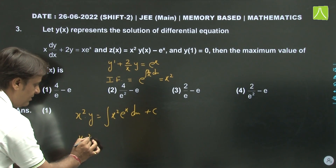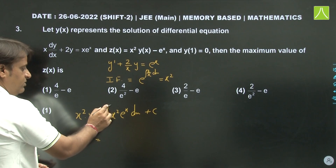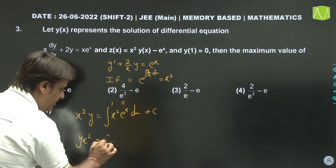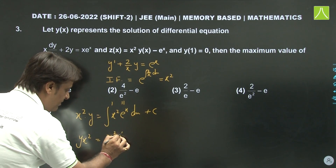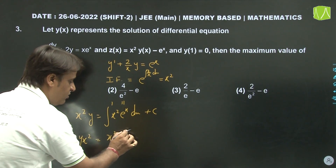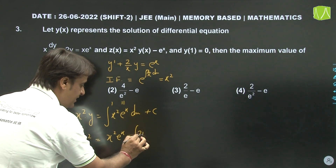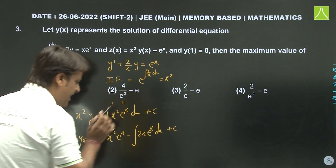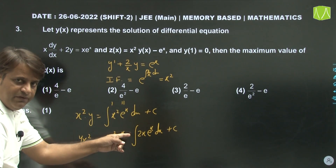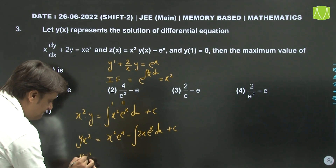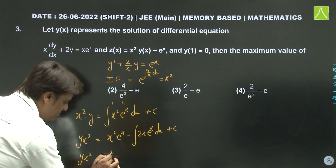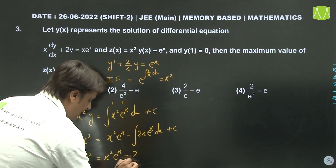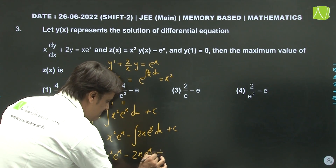We apply integration by parts: y × x² = x² eˣ minus ∫2x eˣ dx plus constant C. Applying by parts again: y × x² = x² eˣ minus 2x eˣ + 2eˣ + C.